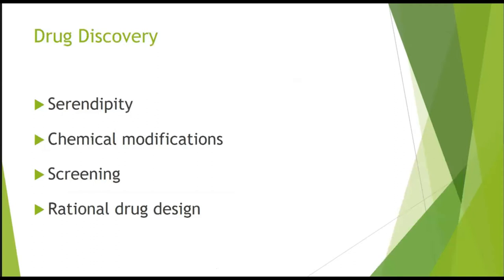How are drugs discovered — in the past, presently, and in the future? There are four approaches for drug discovery. The first is by serendipity — discovery by chance, trial and error. A newer one is by chemical modifications of known drugs or natural products. Another is by screening of databases. And the most advanced method is rational drug design, which is the smartest and cheapest way of drug discovery.